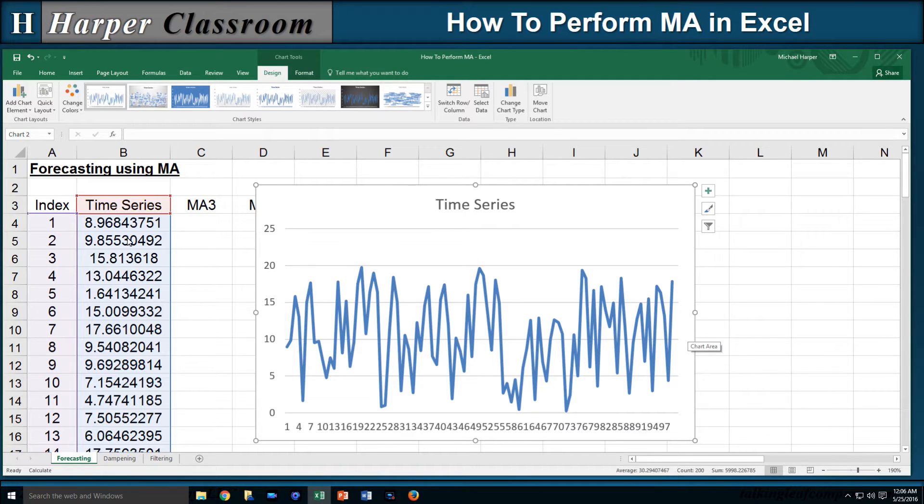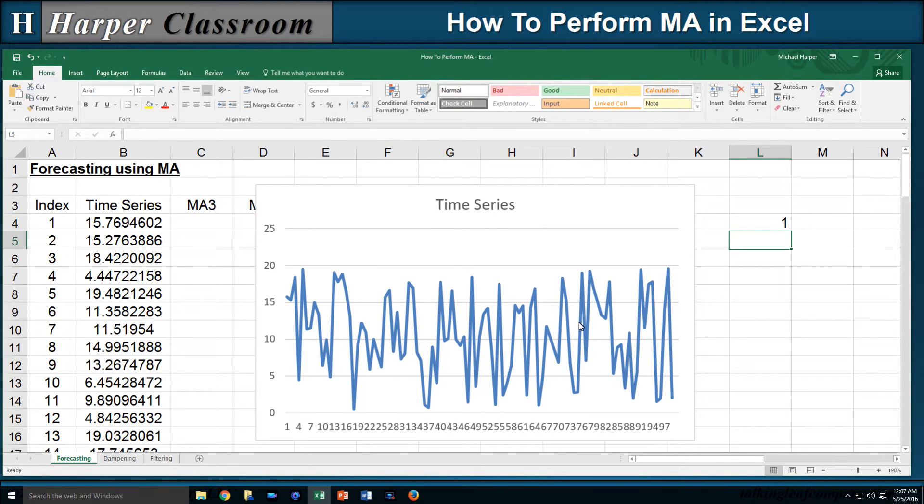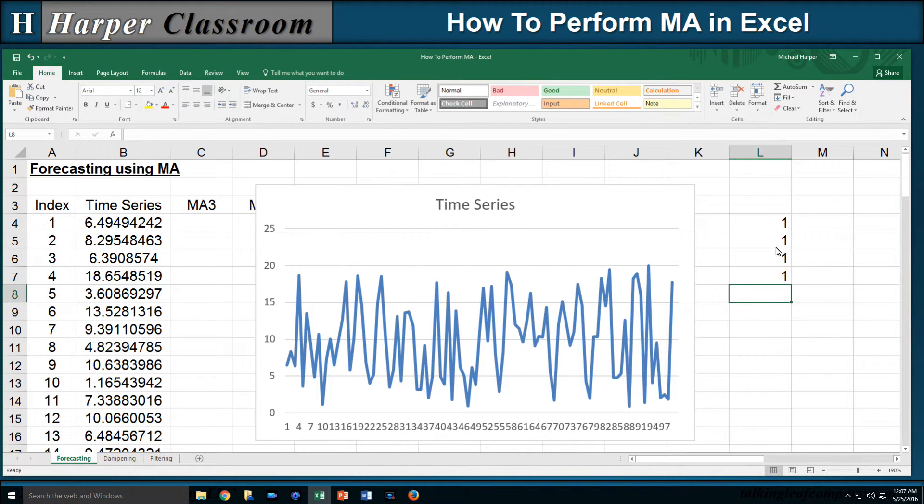And since this random number generator is a function, every time I enter something, it'll generate new random variables. So every time it'll give me a new random time series.